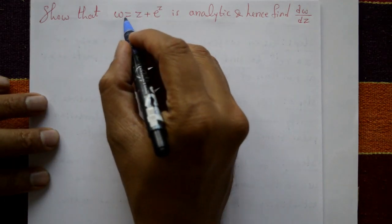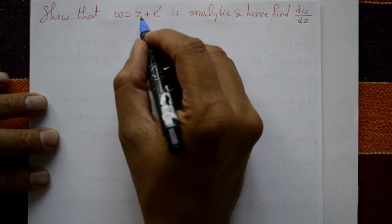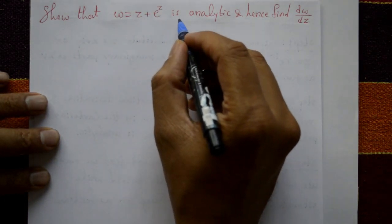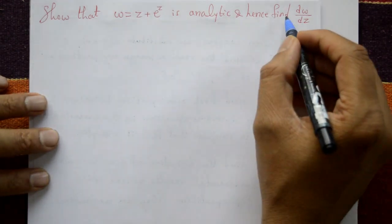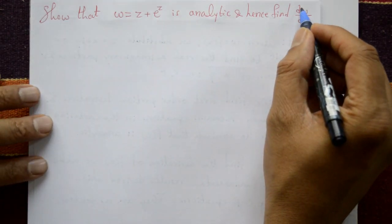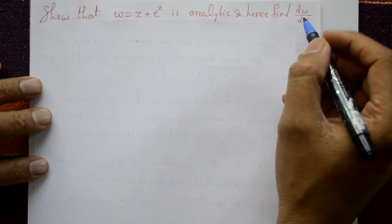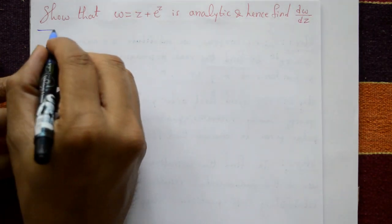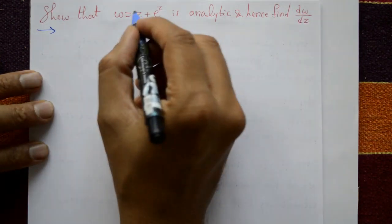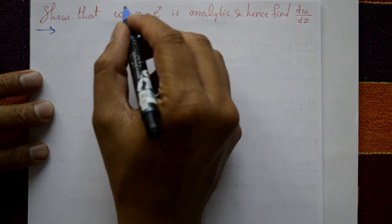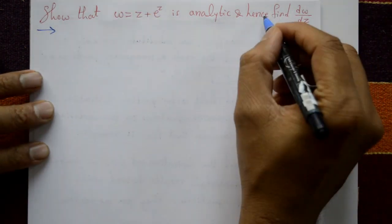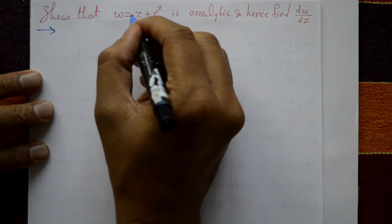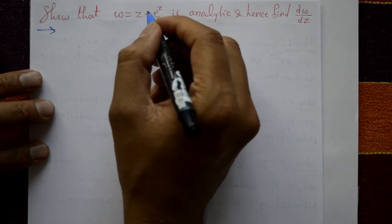Show that w = z + e^z is analytic, and hence find dw/dz. Solution: to find the derivative dw/dz, differentiate with respect to z.